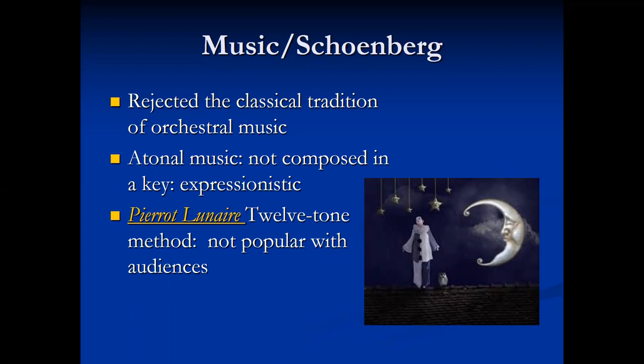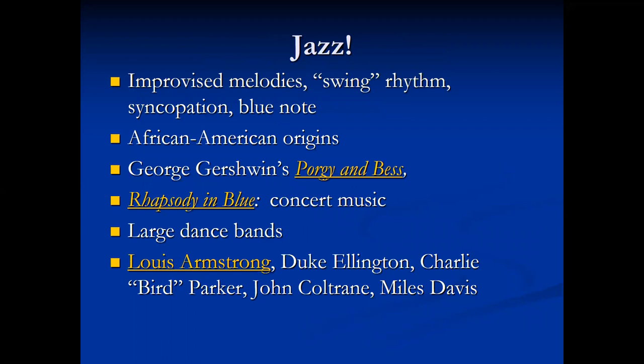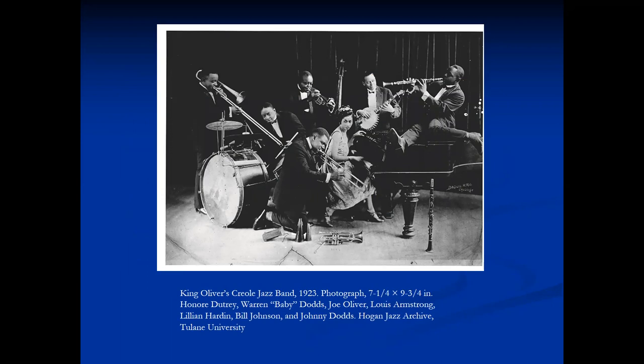In the US, a new genre of music developed from African-American origins. Jazz used improvised melodies, swing rhythm, syncopation, and the blue note. On your own, listen to selections from George Gershwin's Porgy and Bess and Rhapsody in Blue, and the great Louis Armstrong, Duke Ellington, Charlie Bird Parker, John Coltrane, and Miles Davis. In this 1923 photograph, King Oliver's Creole Jazz Band plays at Tulane University in New Orleans.